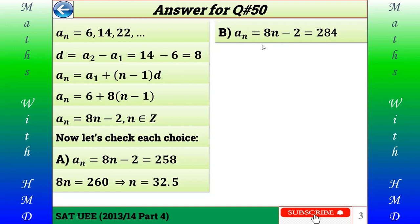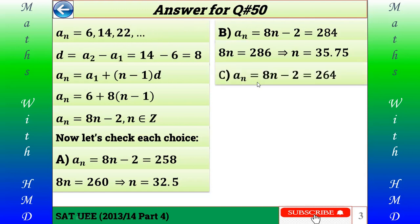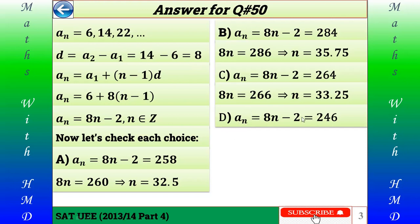For choice C, the number is 264. Setting 8n minus 2 equal to 264: 8n equals 266, so n equals 33.25, which is not an integer. Hence 264 is not a term in this sequence. For the last choice D, which says 246: setting 8n minus 2 equal to 246, we get 8n equals 248.